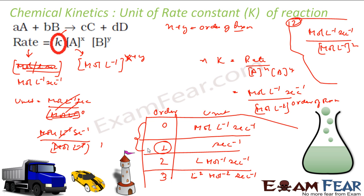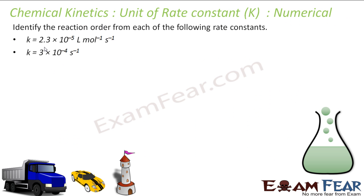The key point is that the unit of K, the rate constant, is different for different orders of reaction. So just by looking at the unit of the rate constant, we can tell the order — for example, liter per mole per second indicates second order, and per second indicates first order.